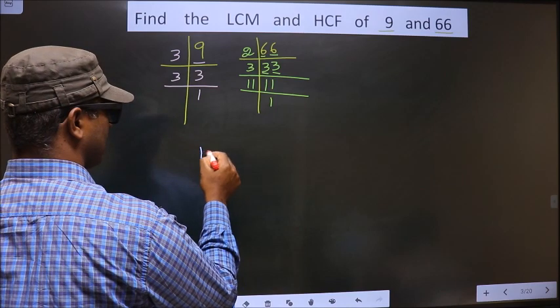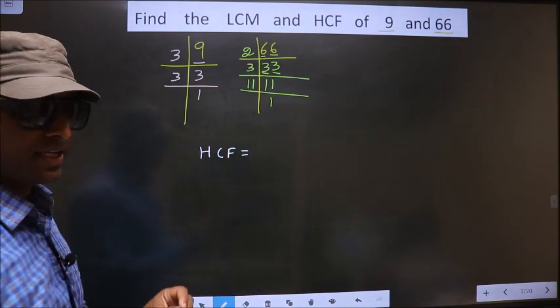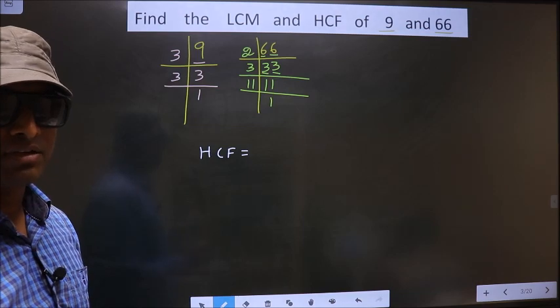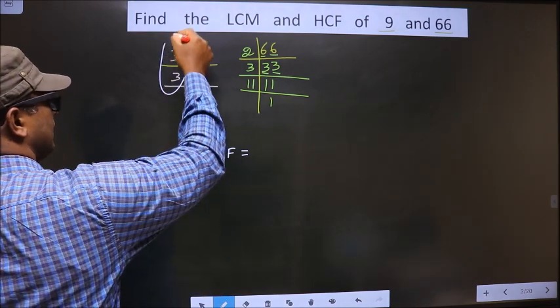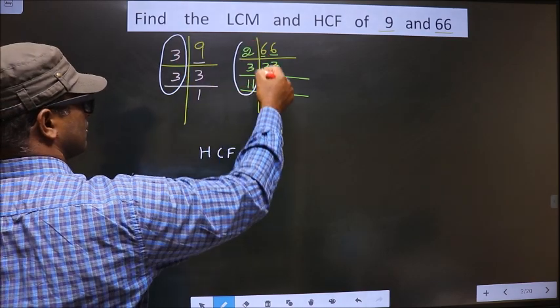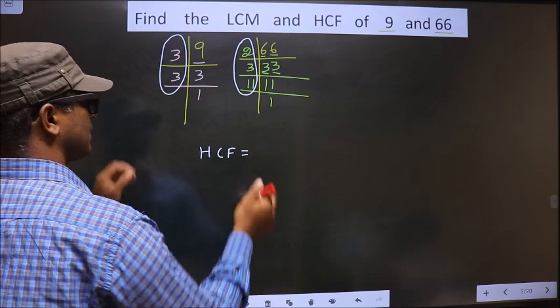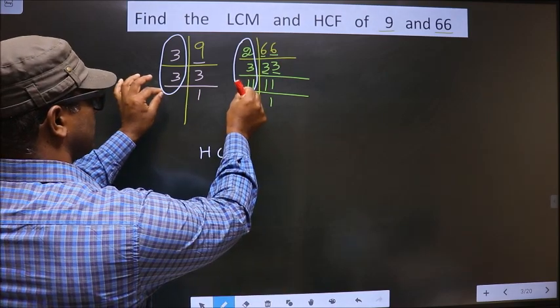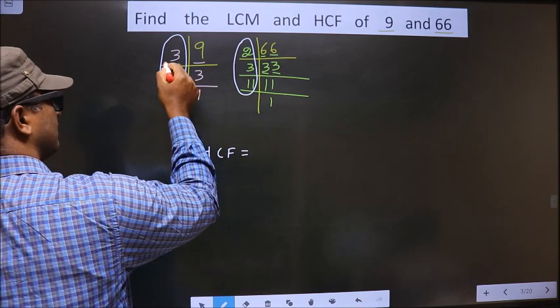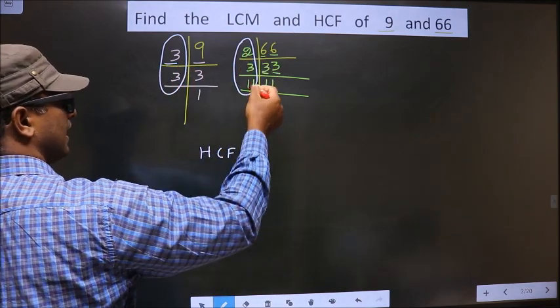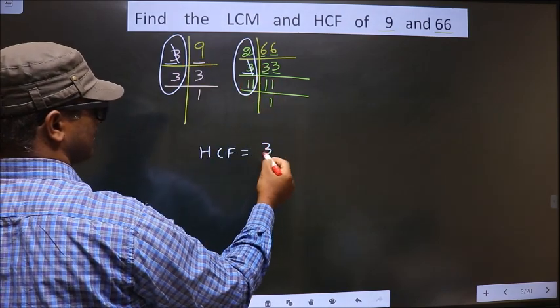So now our HCF is, HCF is the product of numbers that are present here and also here. So now we should find the numbers that are present in these two places. So let us find, starting with the number 3. Do we have 3 here? Yes. So you cut 3 and write here.